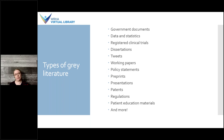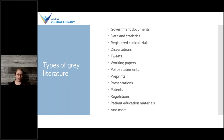Types of grey literature can include government documents, statistics, clinical trial registries, dissertations, tweets and other social media posts, working papers, policies, preprints, presentations, patents and regulations, as well as patient education materials and other electronic resources like blogs. It covers a whole variety of different publication types. So when you say you're searching grey literature, you might be interested in one of these or all of them — there's really a great deal of variety in the type of material you might find.